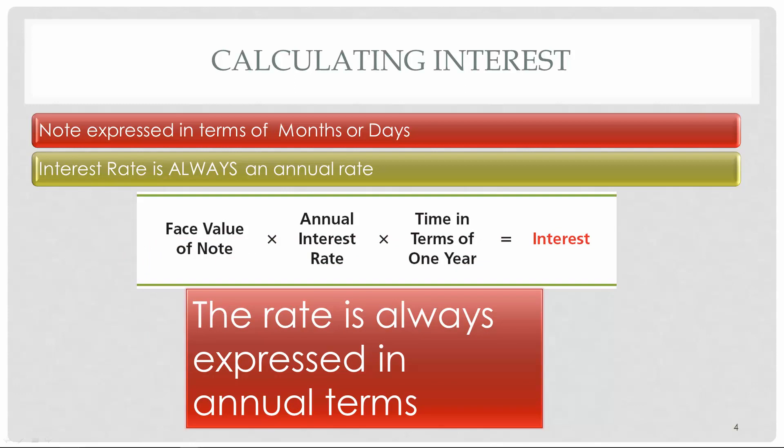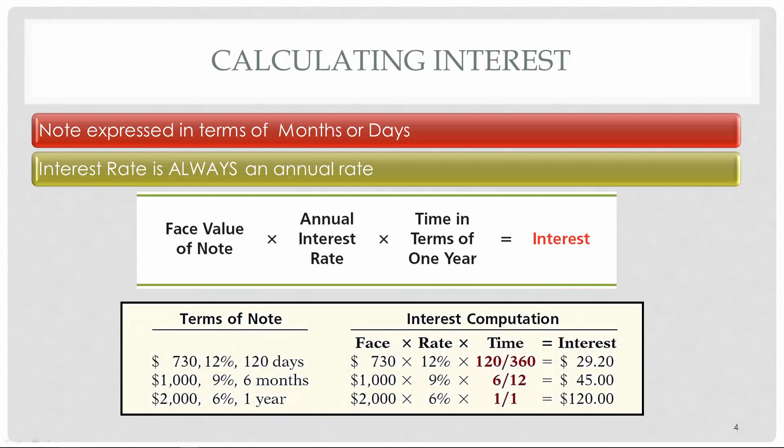No matter how long the note is, the interest rate is always expressed in annual terms. For a 120-day note with a face value of $730 at 12%, we calculate: $730 × 12% × (120/360). We use 360 instead of 365 because that goes back to the time before calculators — 120 out of 360 is much easier to compute. If a note is expressed in days, use 360. For a $1,000, 9%, six-month note, we use 6 out of 12 since it's expressed in months.